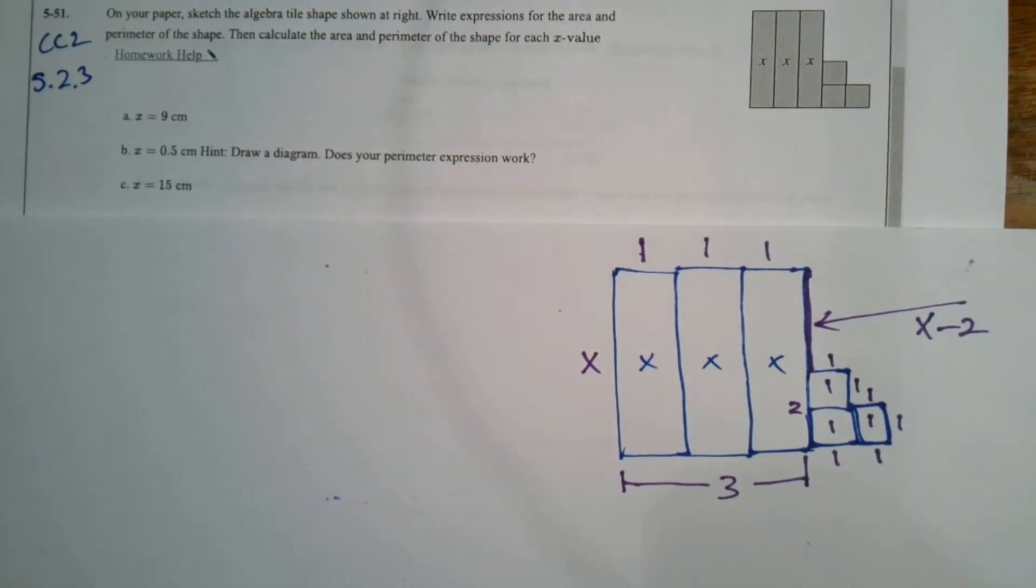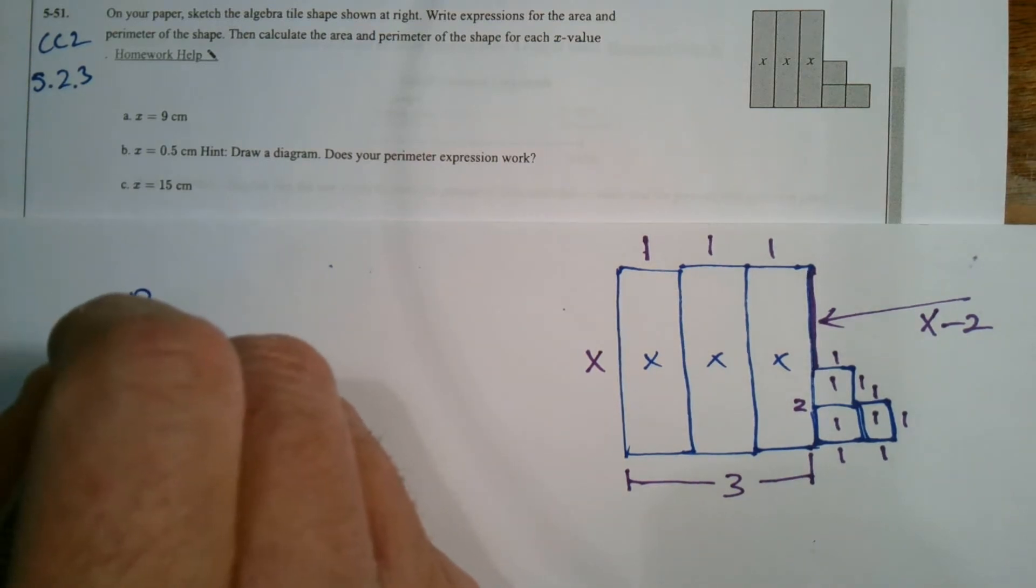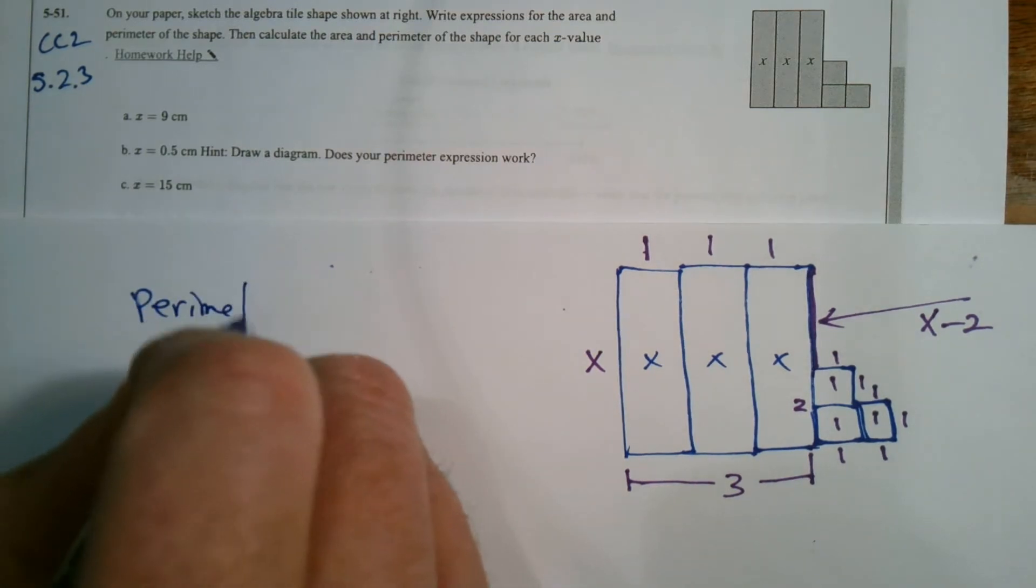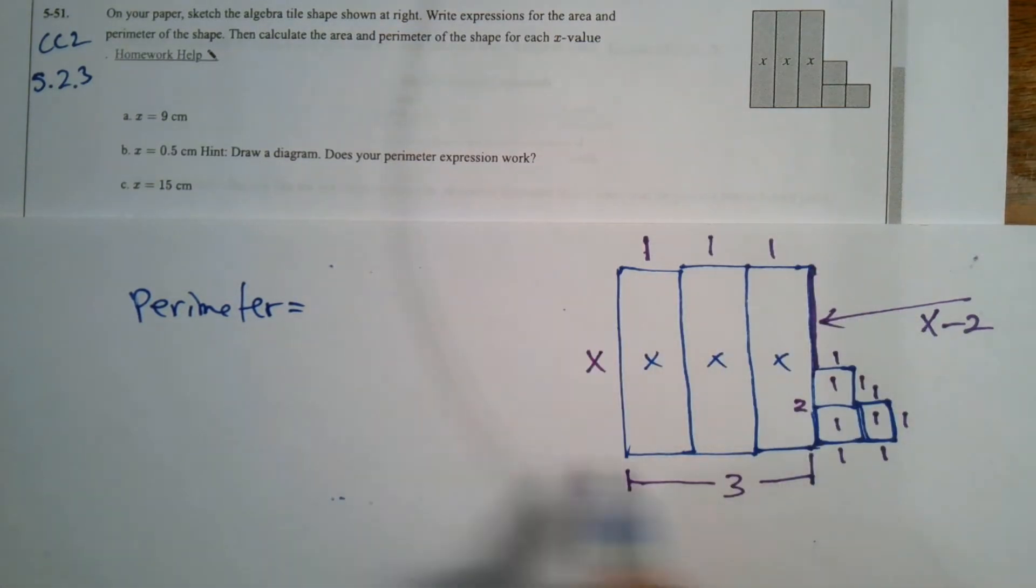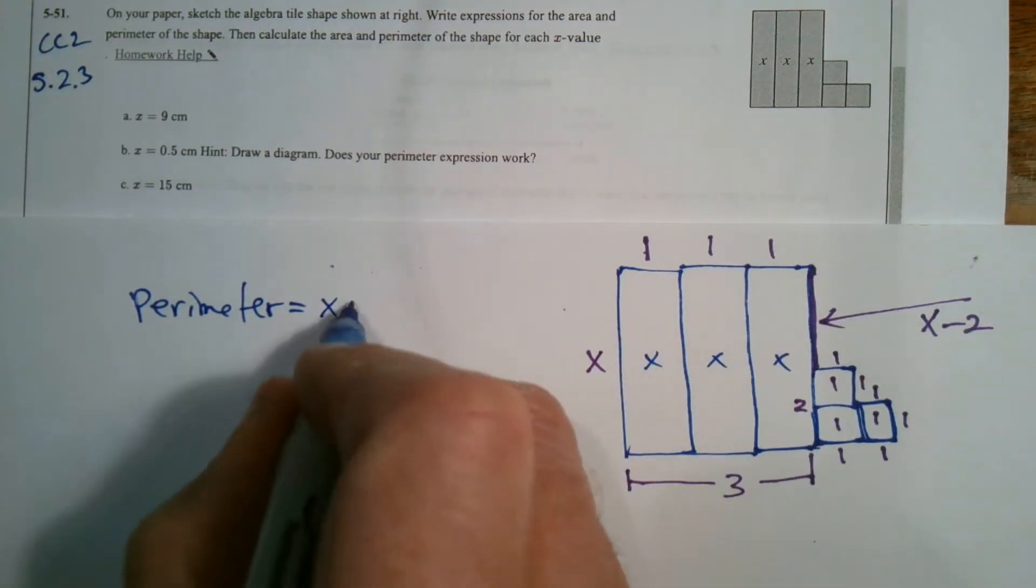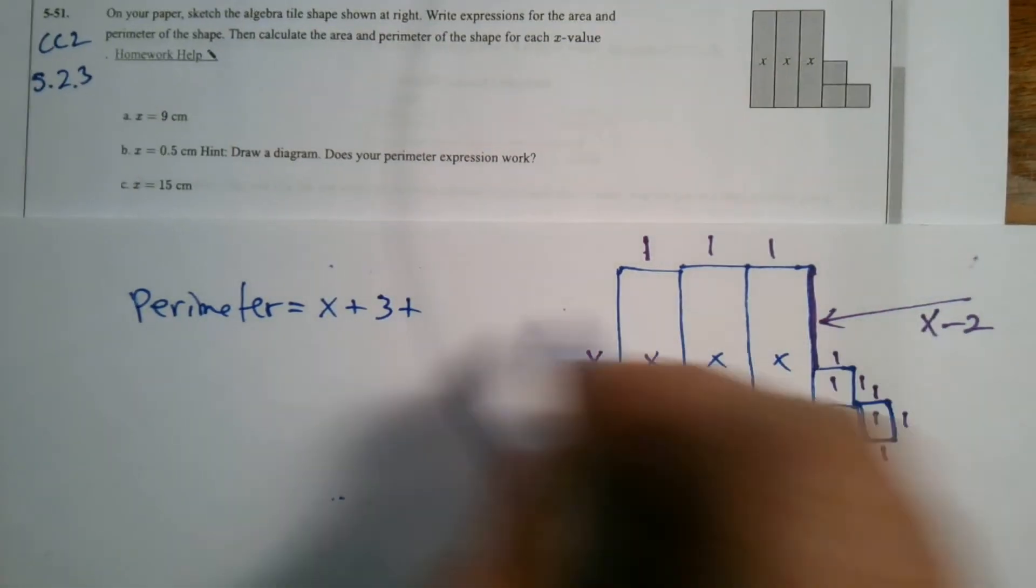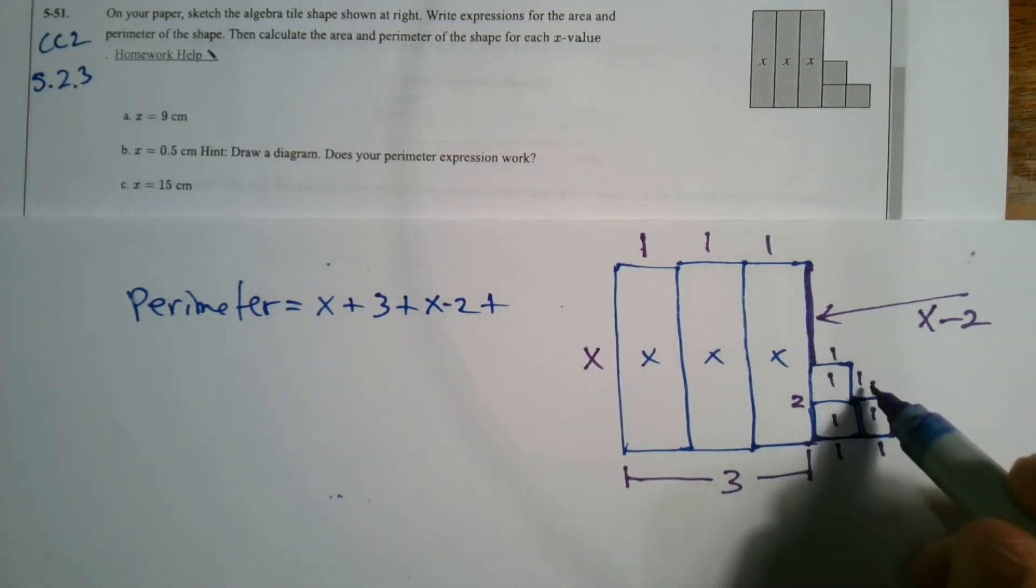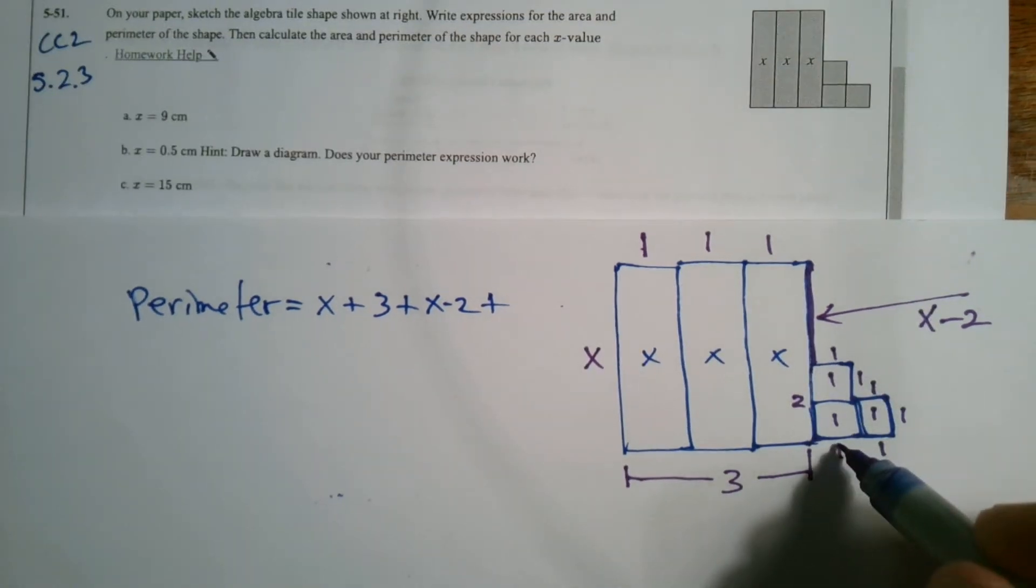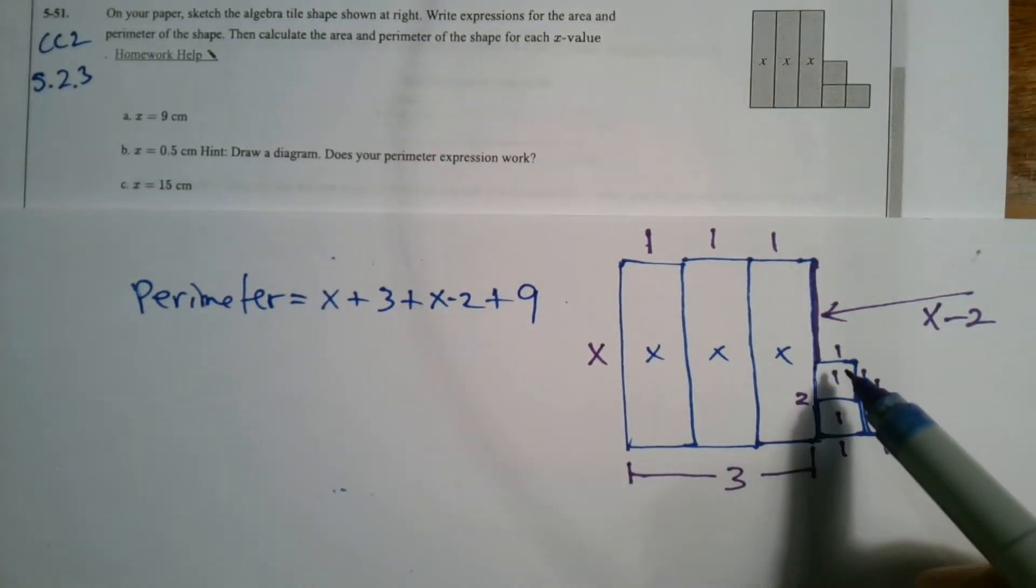Okay, so if I'm going to write now the perimeter, we'll start with perimeter. Perimeter is the distance on the outside, right? So it's X plus, I can go one, two, three, three plus, and then this is the X minus two plus, what do we have? One, two, three, four, five, six plus another three is nine.